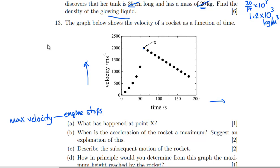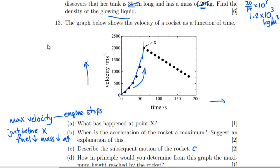When is the acceleration of the rocket a maximum? Acceleration is the gradient, so the maximum gradient occurs just before point X. The explanation is that fuel is decreasing, so mass is decreasing. For the same thrust force, a lower mass gives a greater acceleration — so acceleration increases up to the point the engine stops.